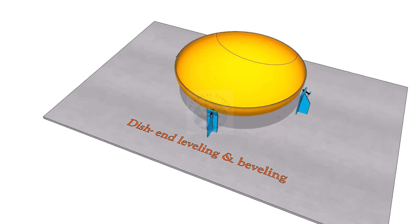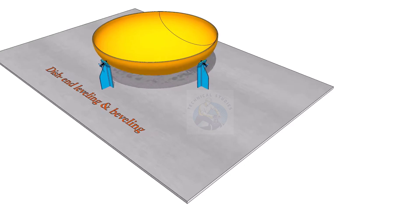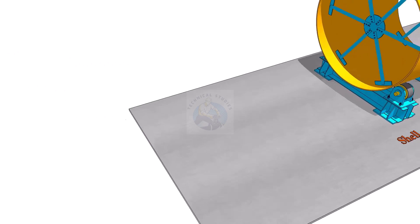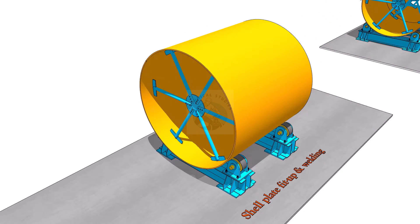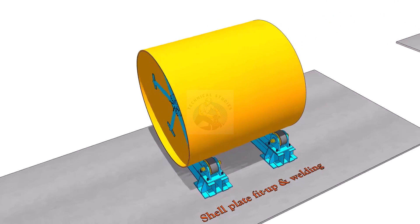Level the dish end and bevel the edge. After cutting and beveling, roll the shell plates. Fit up the joint and complete the long seam welding.